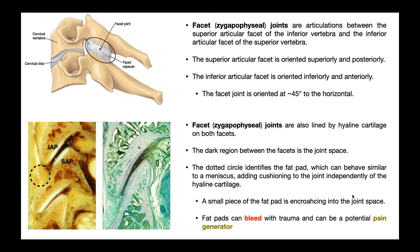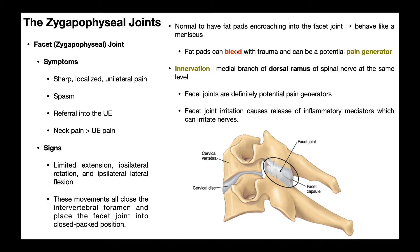Sometimes the fat pad can encroach into the joint space to provide a little extra cushioning. Because these fat pads are adipose tissue, they're supplied with blood vessels, so they can bleed if there's trauma. For example, if you have a whiplash — an acute injury to the neck — the fat pads can bleed. The fat pads are also innervated; they have a nerve supply and can potentially be a pain generator in the cervical spine.